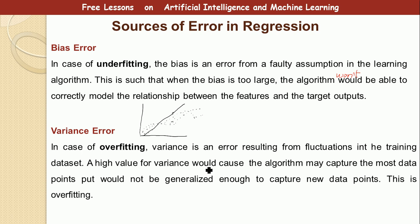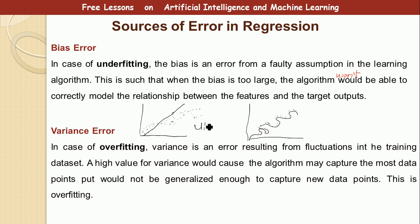On the other hand, variance error occurs when the variance is too high. In this case the algorithm will capture most of the data points but will not be able to model or capture new data. When the variance is too high, the algorithm captures all the data points — this is overfitting. So in the case of bias being too large we have underfitting, and when variance is too high we have overfitting.